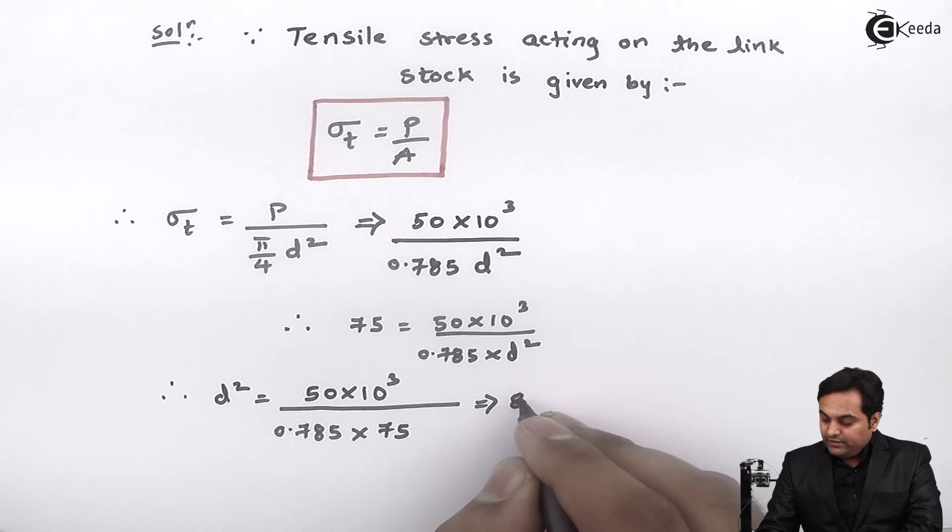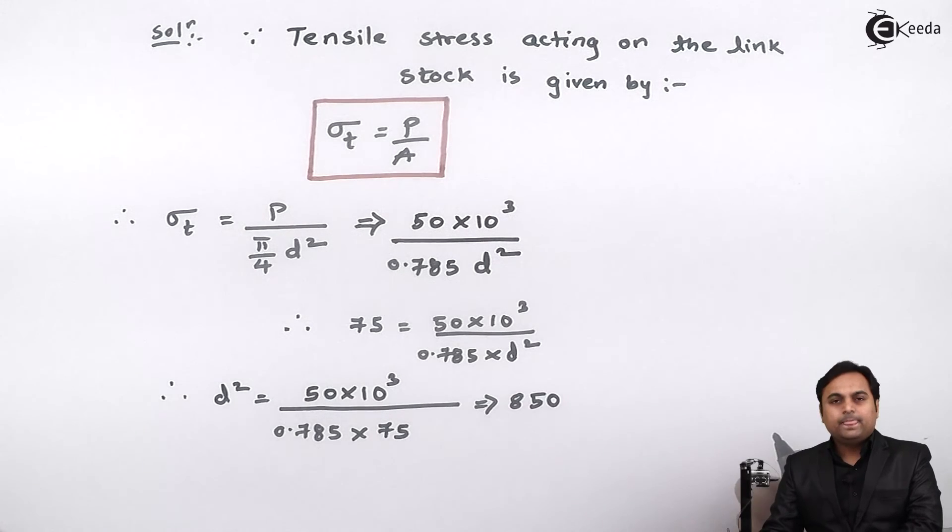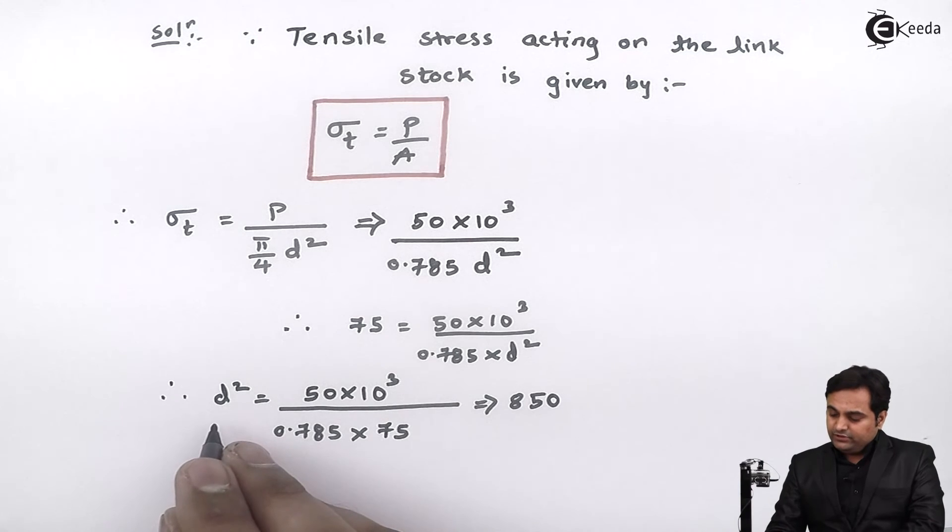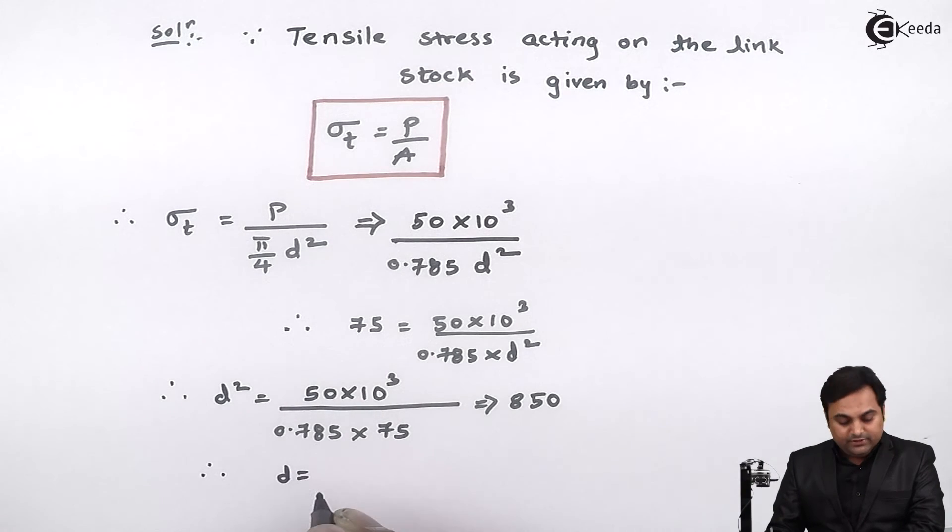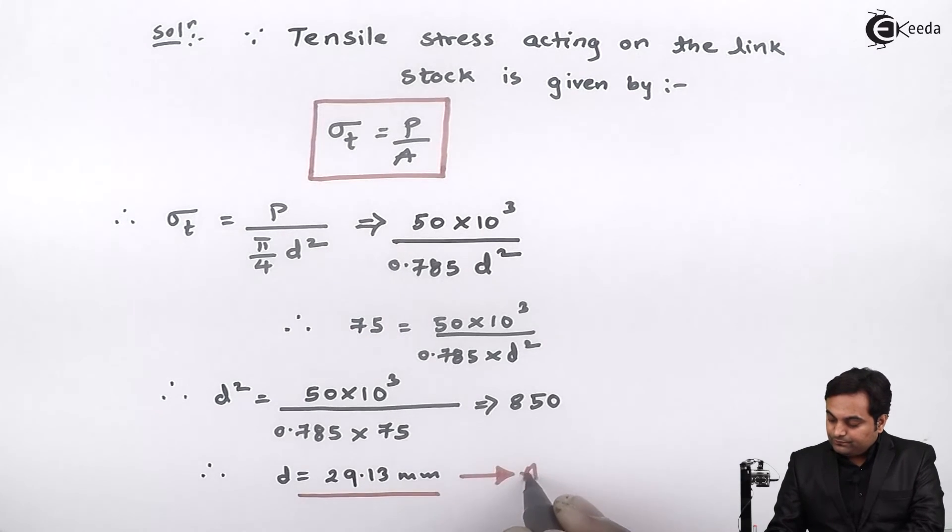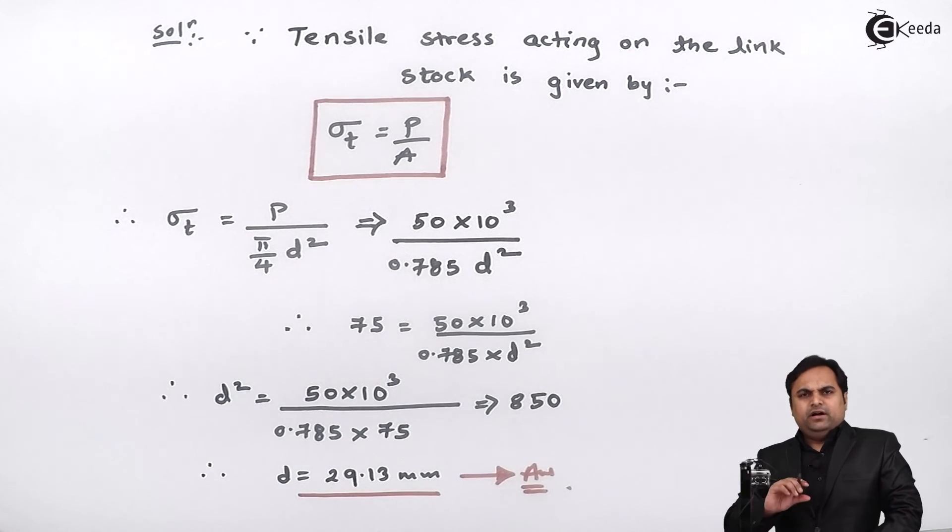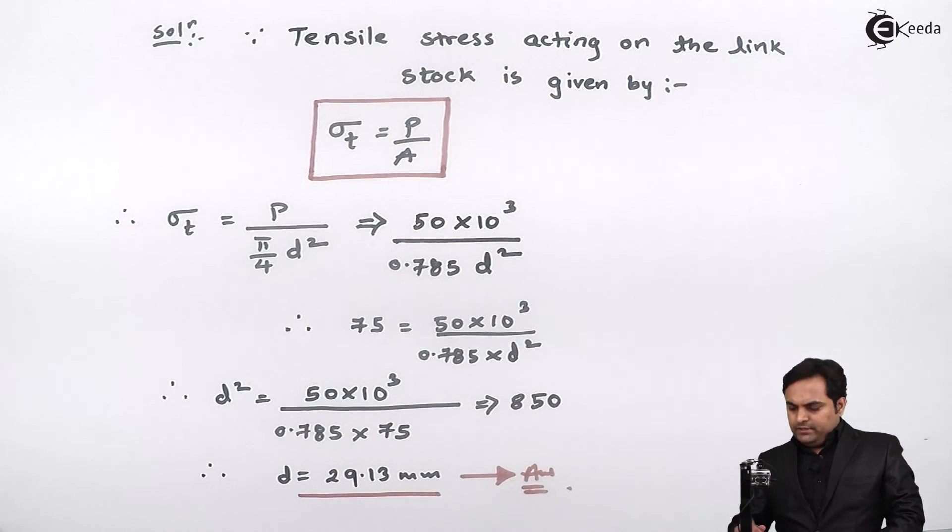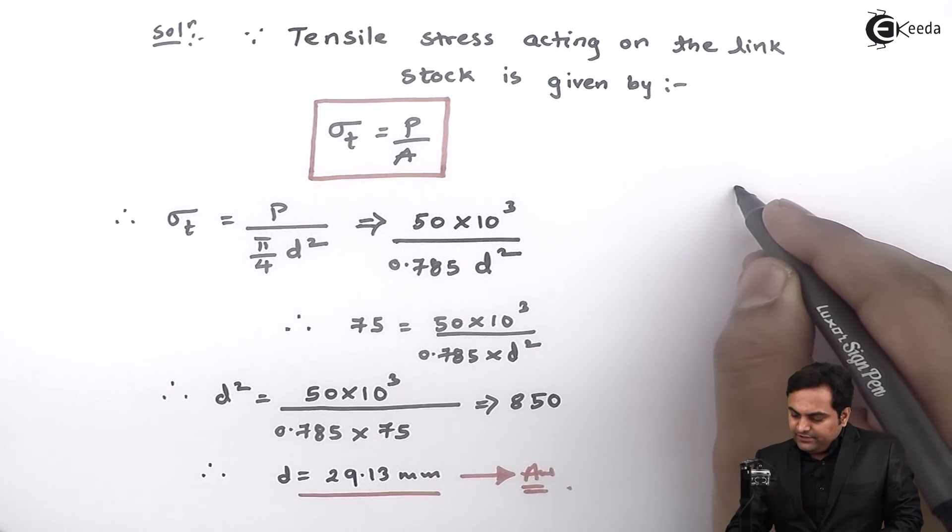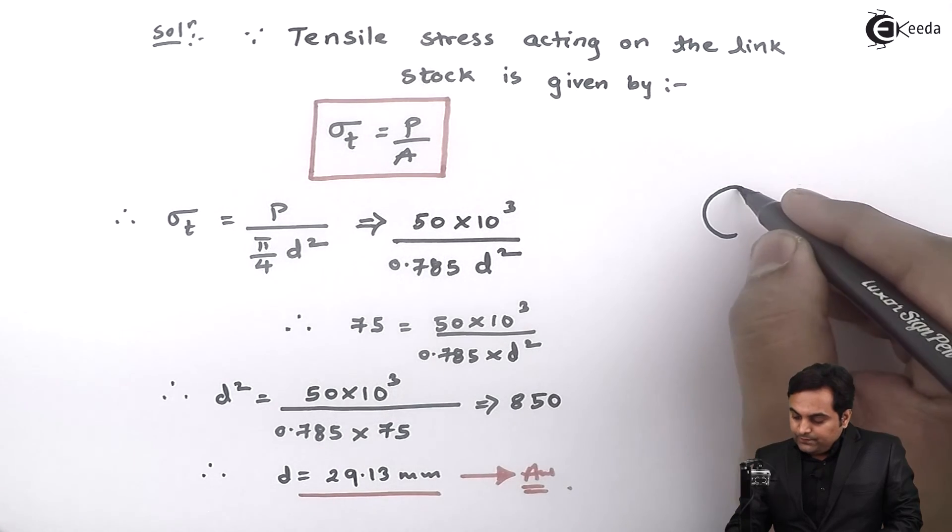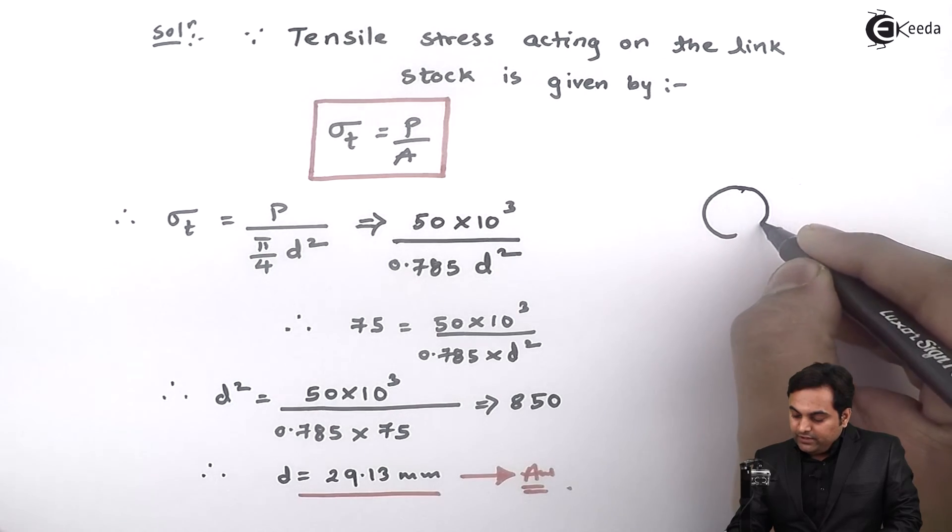First I'll get the value of d² which comes out to be 850. Since we want d, I will take the square root of this, and the diameter comes out to be 29.13 mm. The link stock should have a diameter of 29.13 mm.